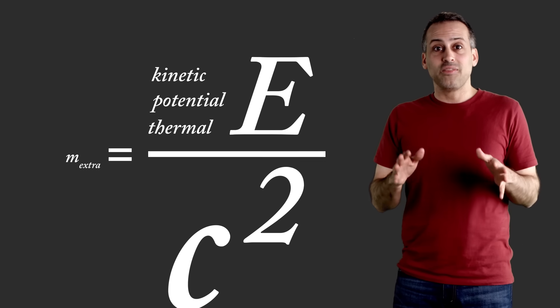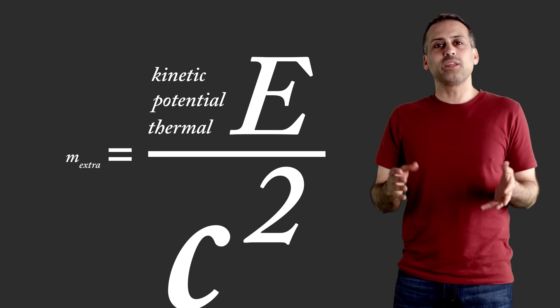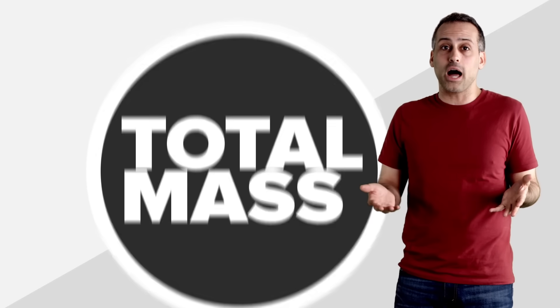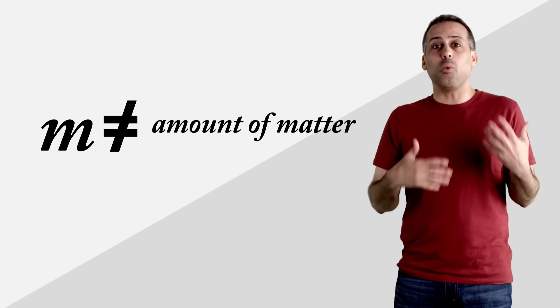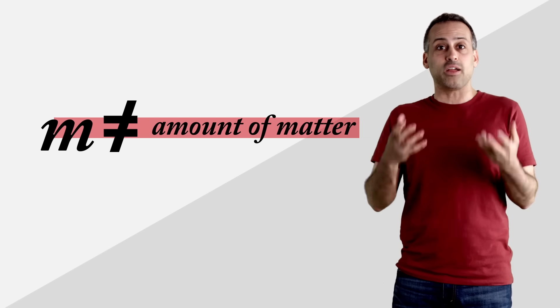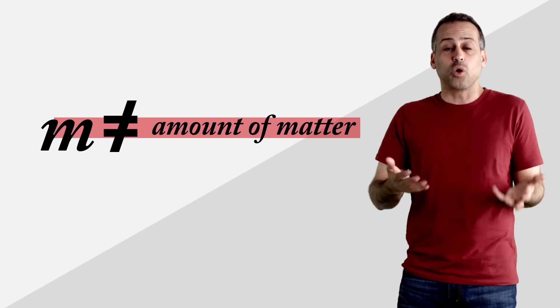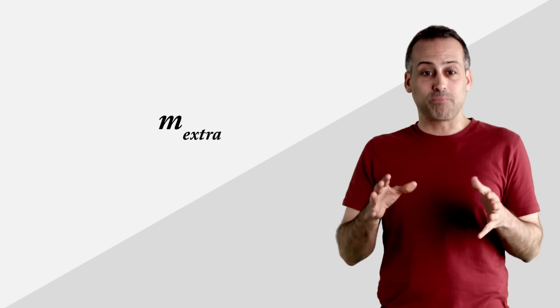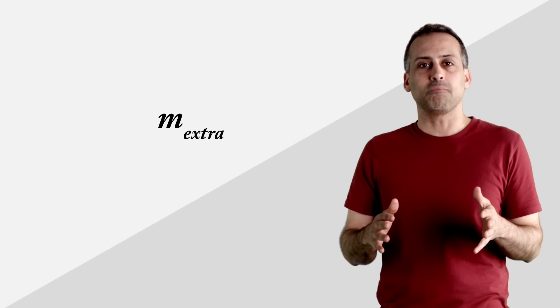Now, since the speed of light is so huge, this extra mass is tiny, only about a billionth of a billionth of a percent of the total mass of the watch. That's why, according to Einstein, most of us have always incorrectly believed that mass is an indicator of the amount of matter in an object. In everyday life, we just don't notice the discrepancy because it's so small. But it's not zero. And if you had perfectly sensitive scales, you could measure it.